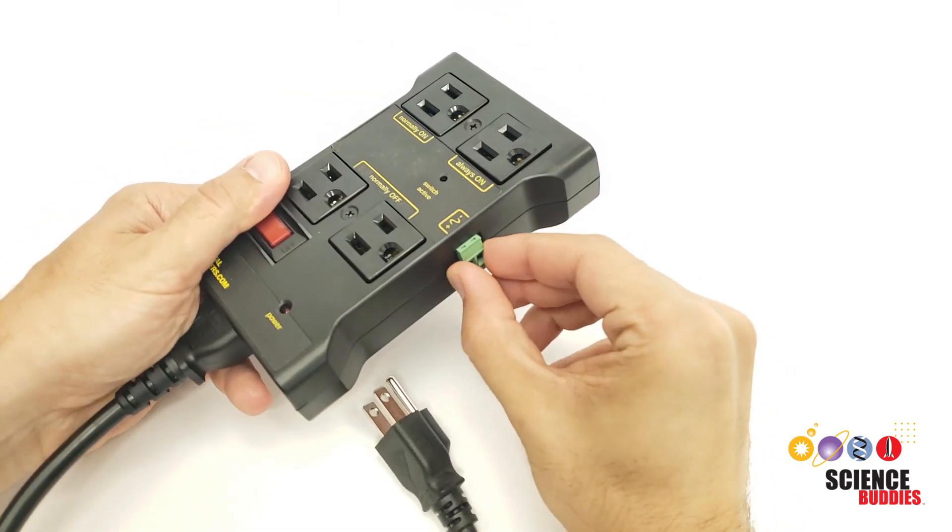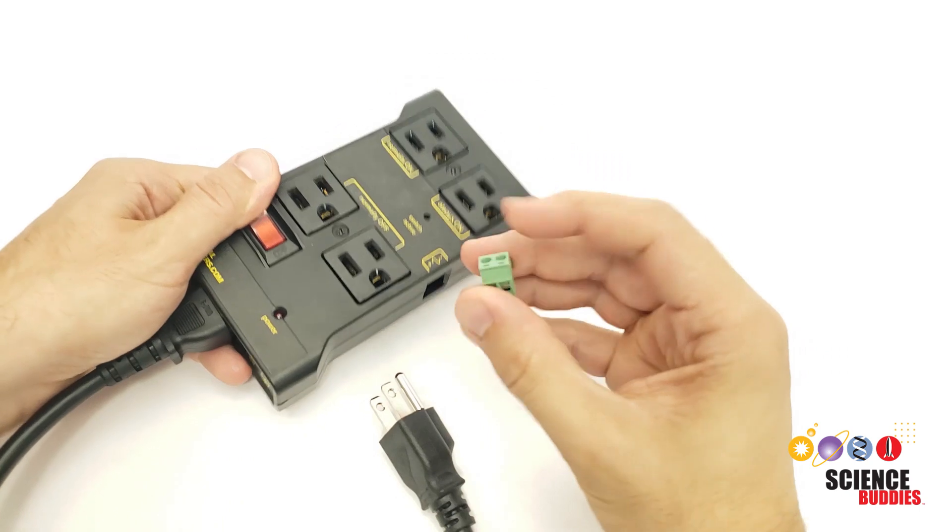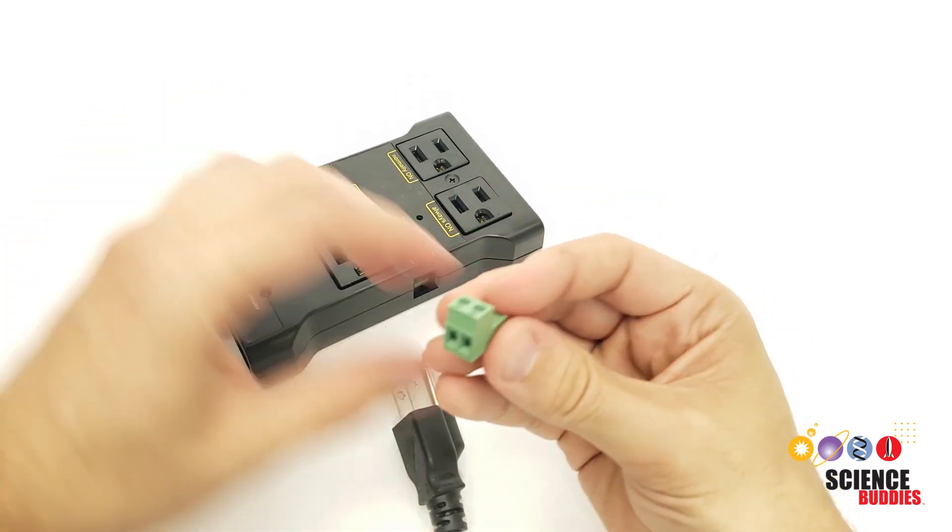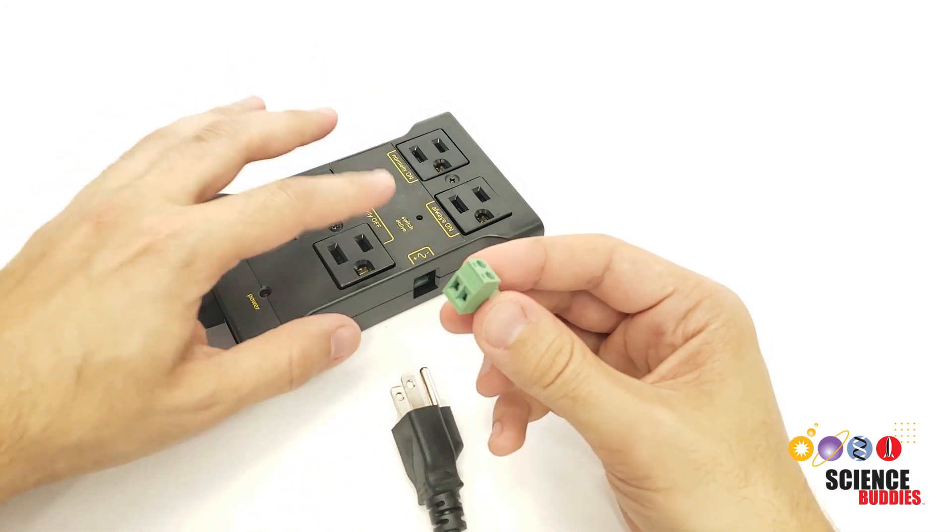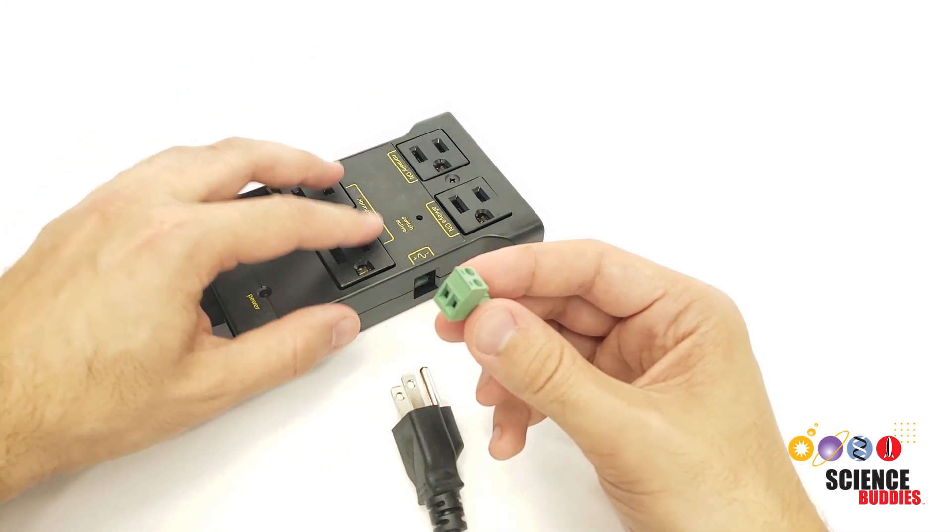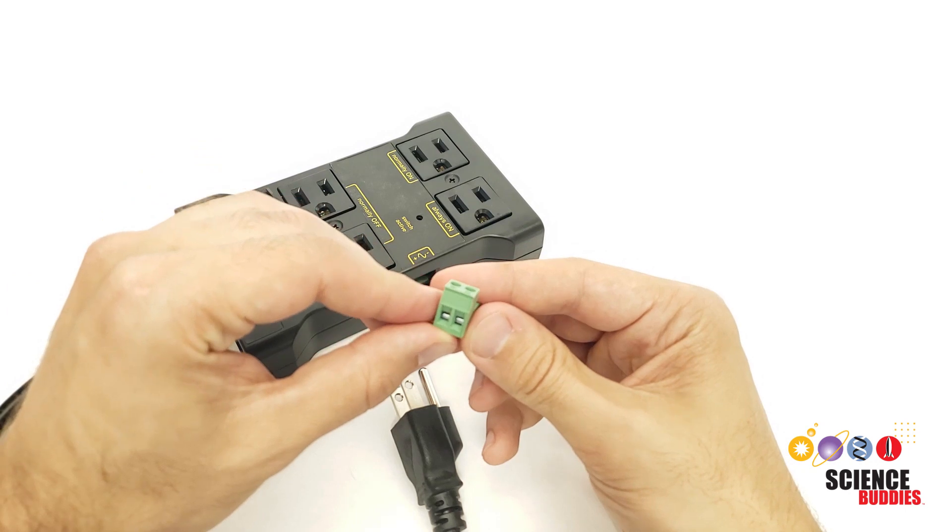The side of the box has this removable screw connector that you can use to connect two wires to the low voltage control signal from your microcontroller. Again, all of the high voltage wiring is safely contained in this box so you don't need to touch any of that wiring yourself.